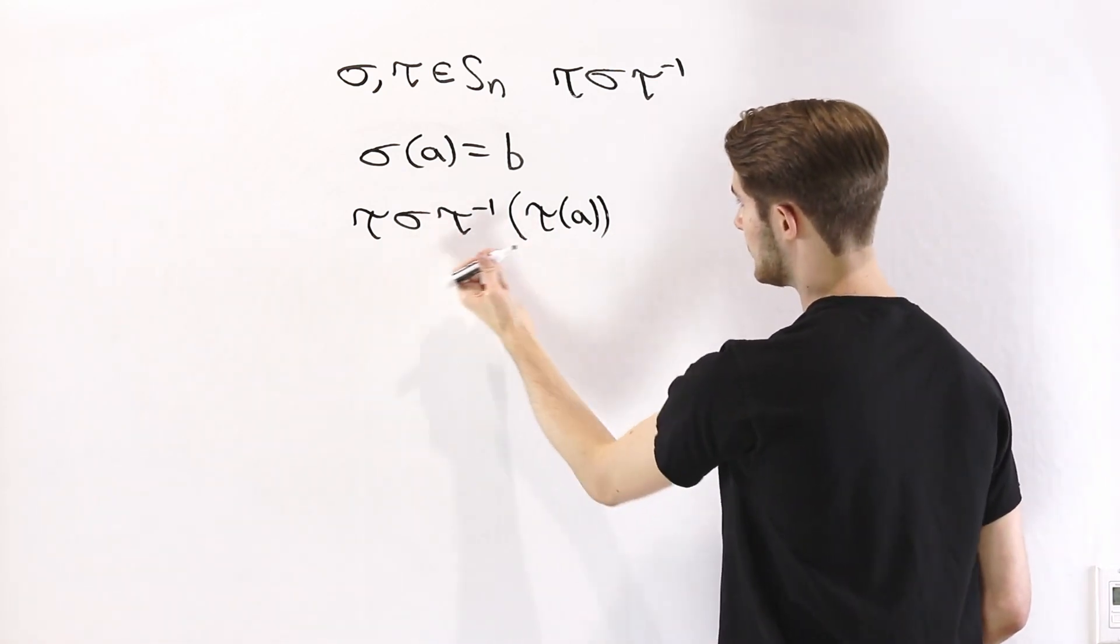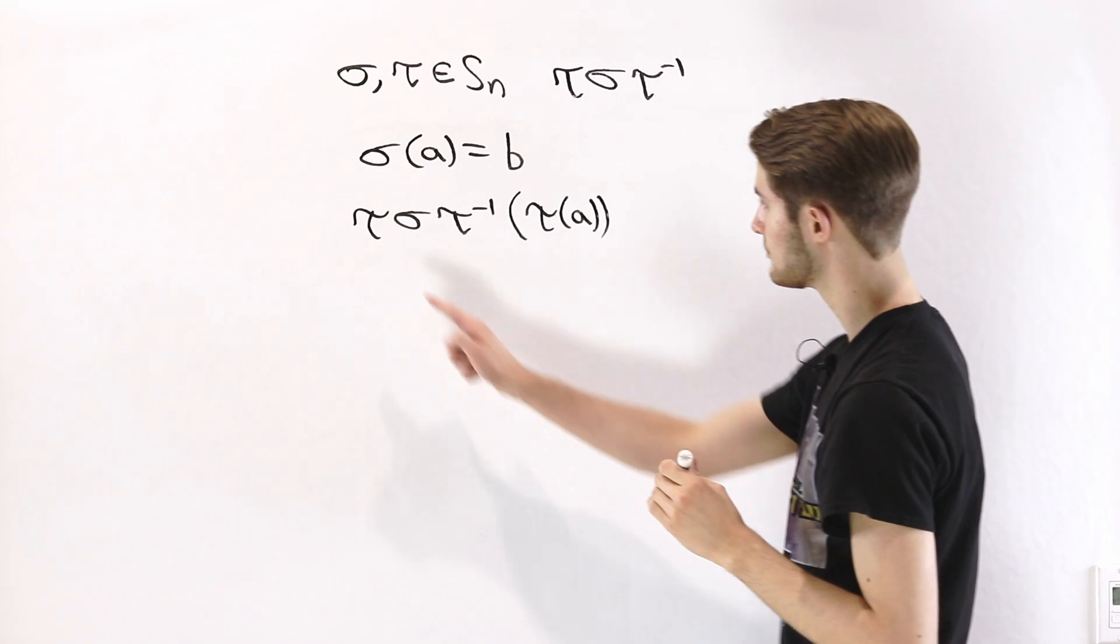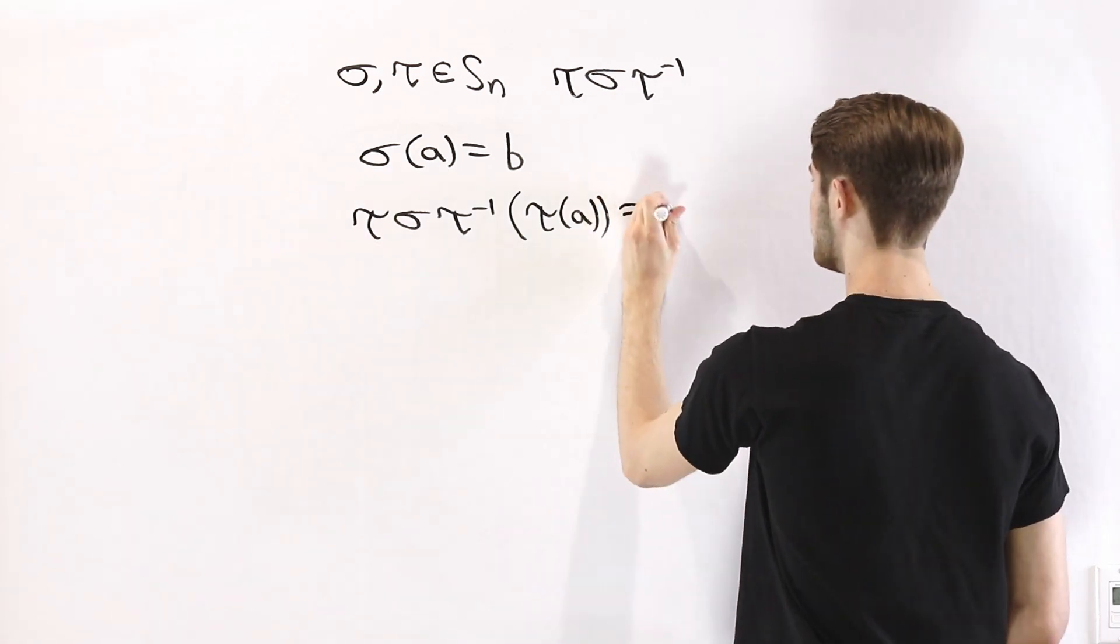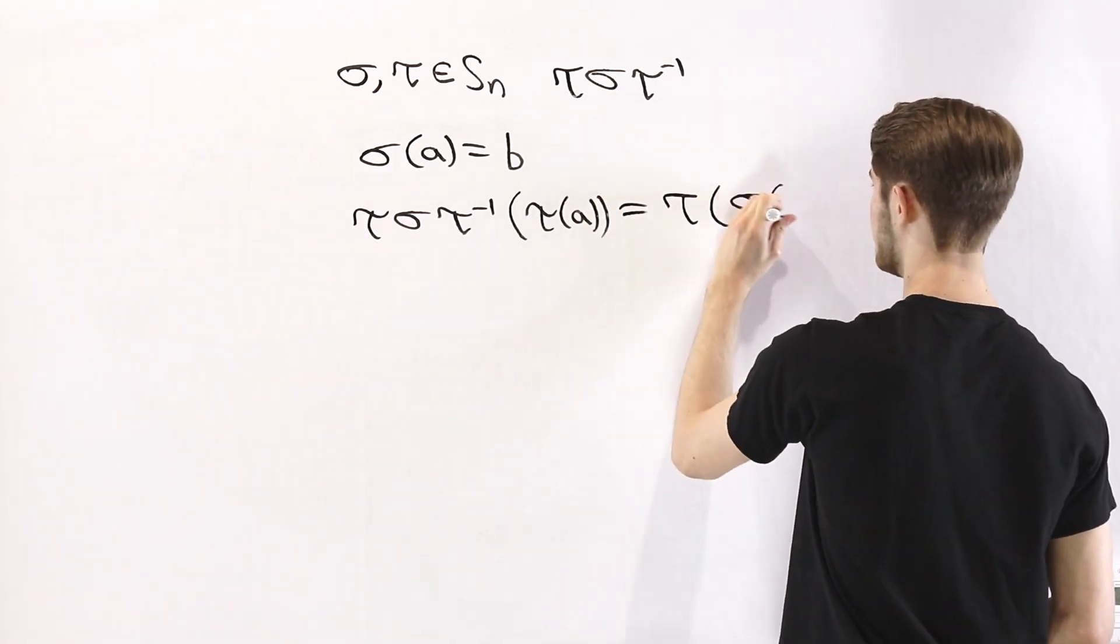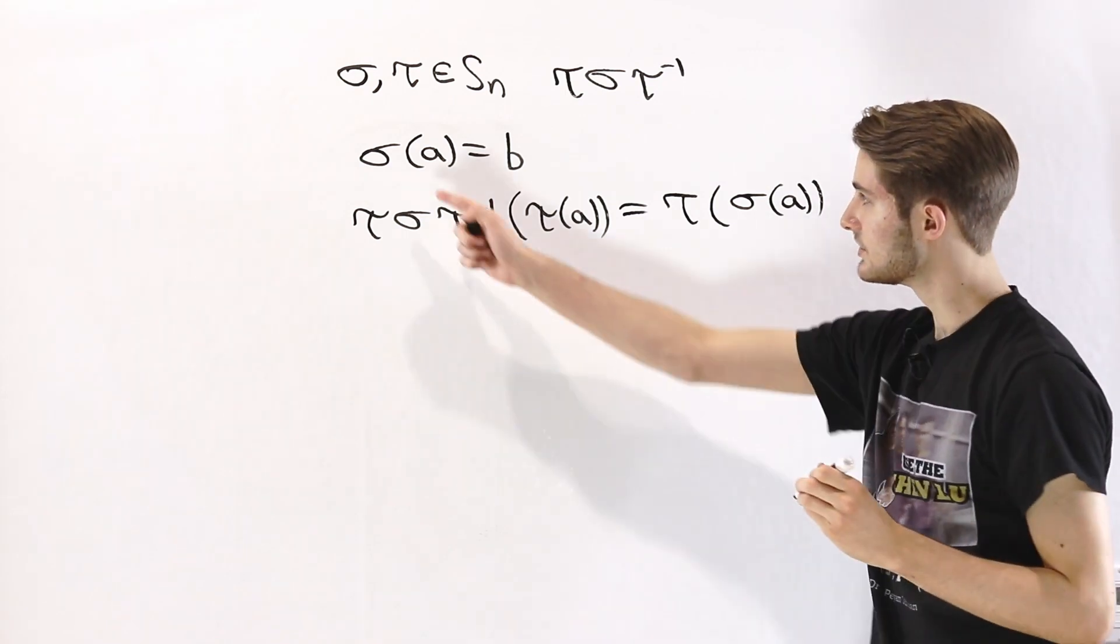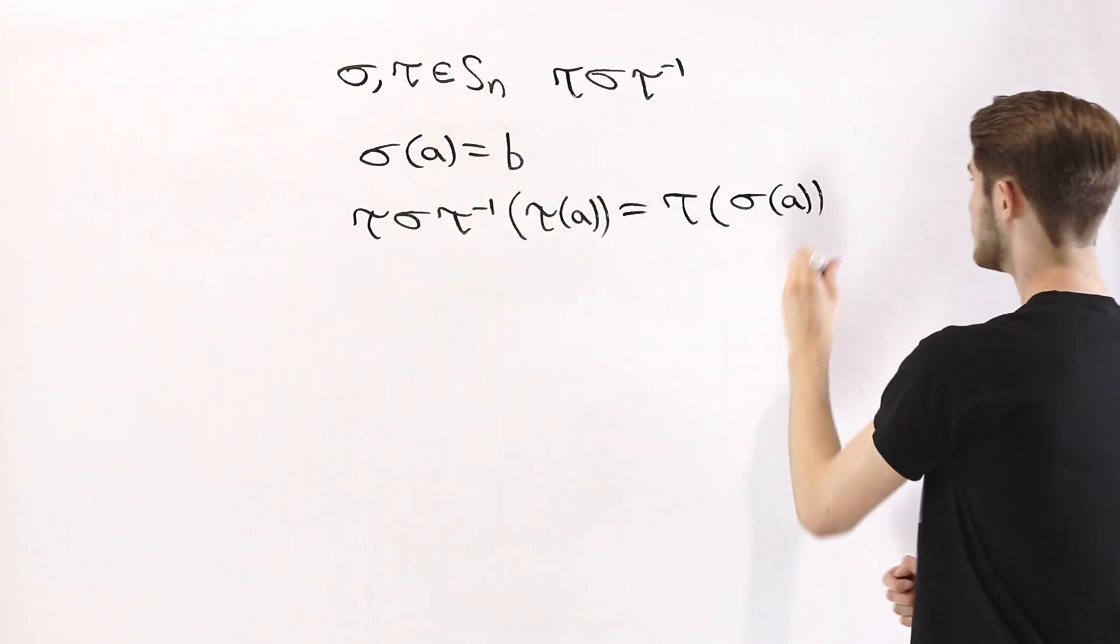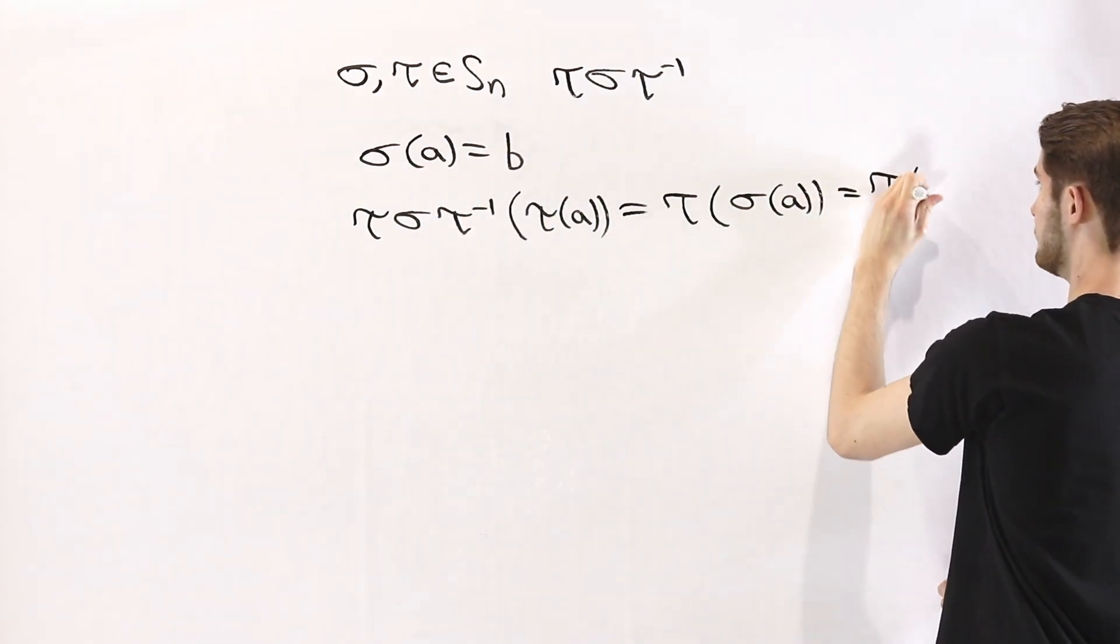And what we're left with is tau of sigma of A. We know that sigma of A is B, so this is going to give us tau of B.